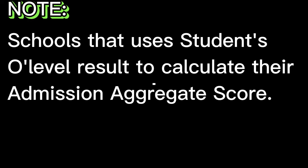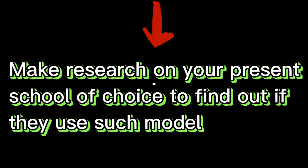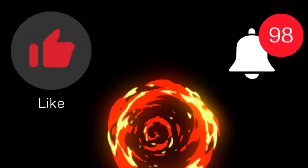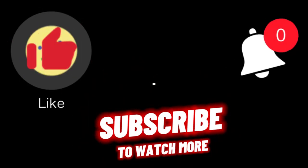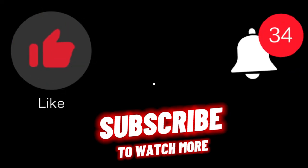Note that this is only applicable to schools that use the student's O-level result to calculate their aggregate admission score. Universities like the University of Benin, from my research, do not really consider the WAEC O-level aggregate score — they judge students based on their JAMB score and their post-UTME screening score. So find out whether your university of choice uses such O-level result aggregate score. If they do, you can calculate it using the example given in this video. Don't forget to give this video a thumbs up and subscribe to our channel for more updates.